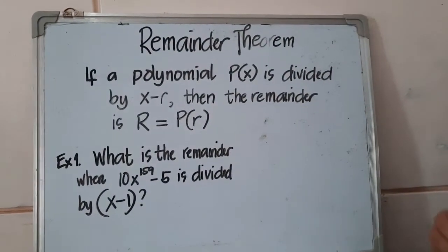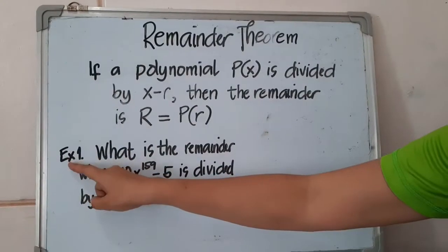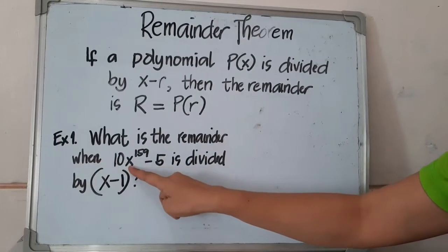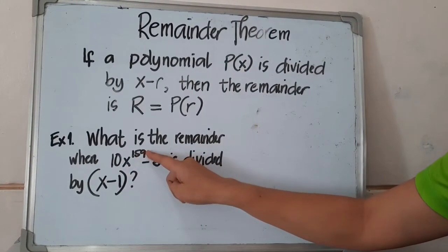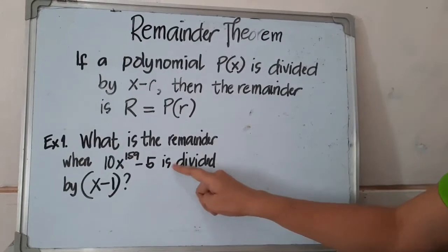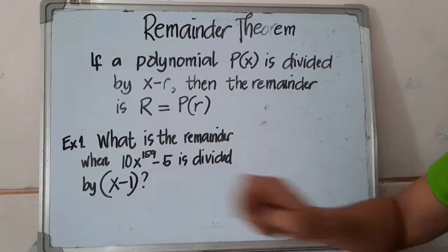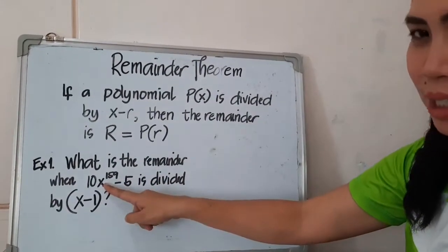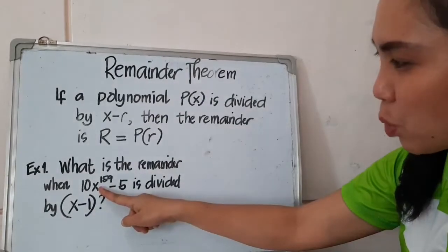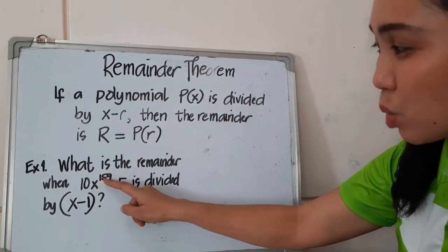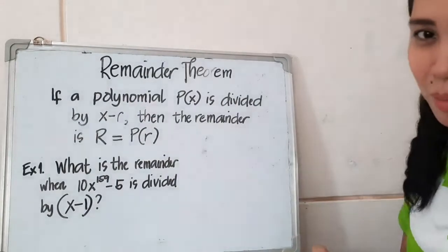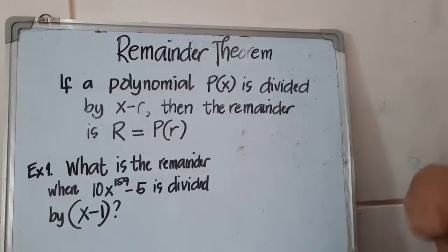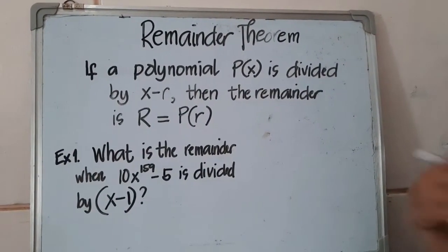I'll give you an example here. What is the remainder when 10x raised to the power of 159 minus 5 is divided by (x-1)? Now, what did you observe? Yes, if you are going to notice, the exponent of our variable is 159 and it's a very large number. So if I will be asking you, are you going to use the synthetic division that we learned in our previous video? Or are we going to use the long division?